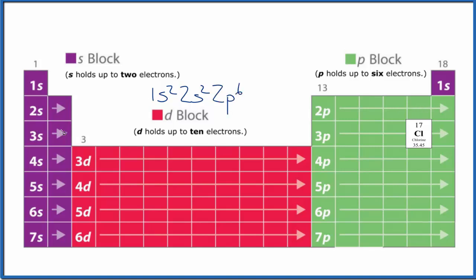3s1, 3s2. We're in the third energy level, and then we go 3p1, 2, 3, 4, 5, so 3p5.